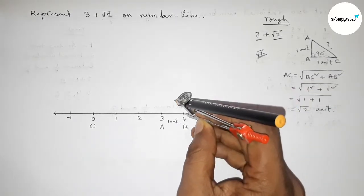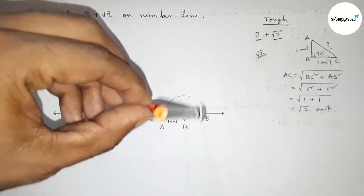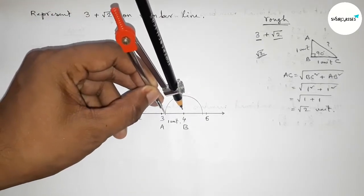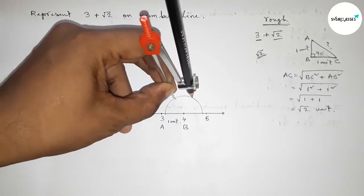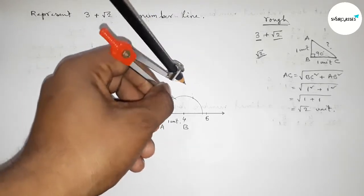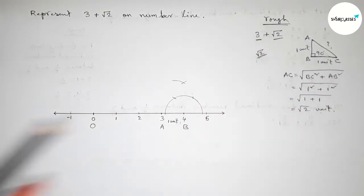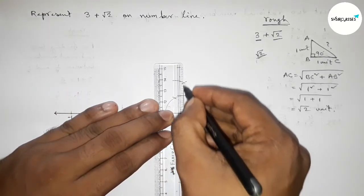Now we have to draw a perpendicular line. Take any length and draw an arc this way, put the compass here with the same length and cut here, put the compass here and cut here, draw an arc again with the same length, and put the compass here and cut here.